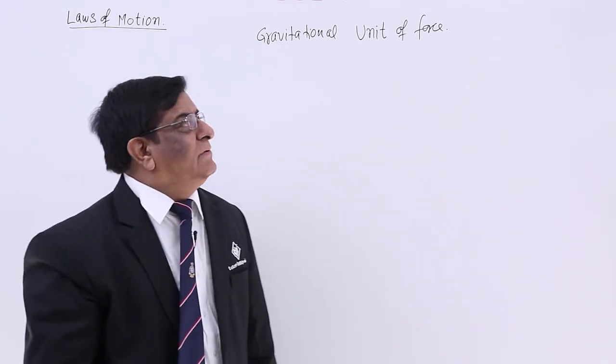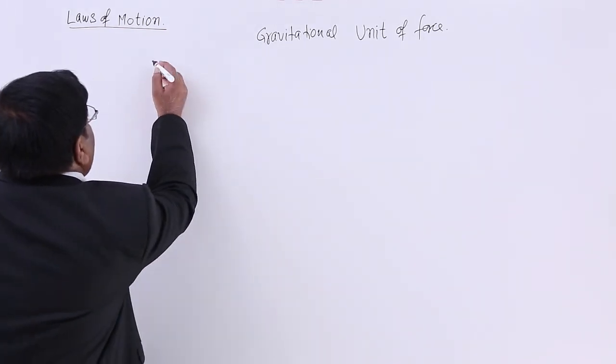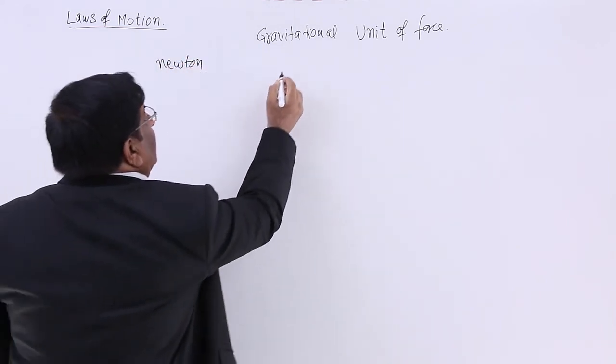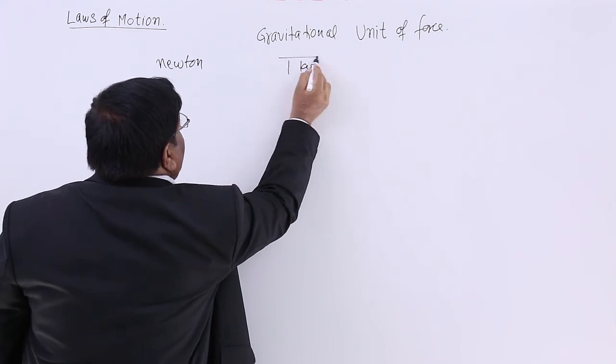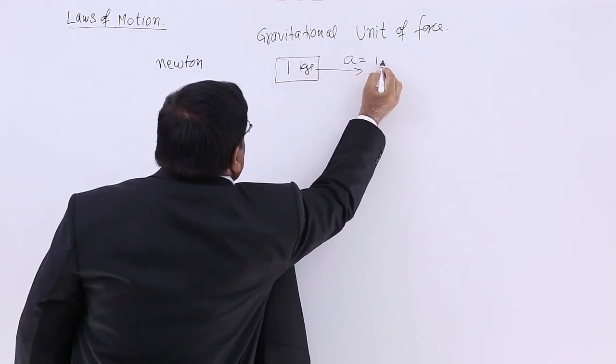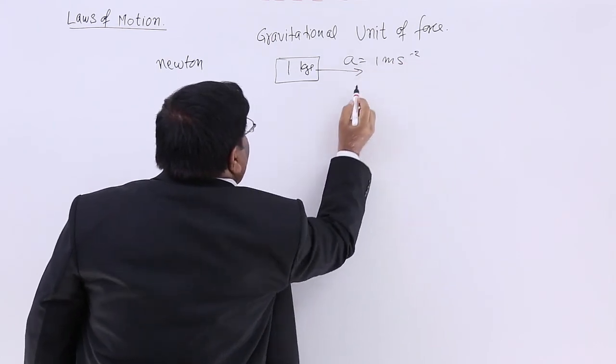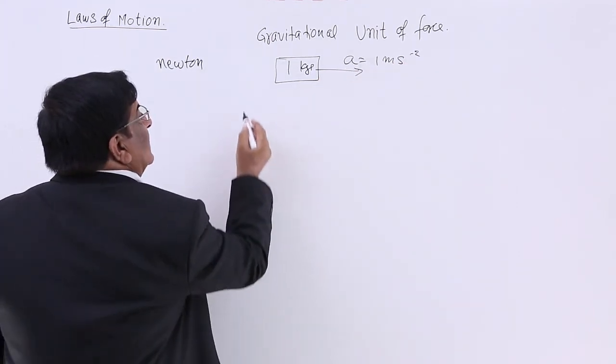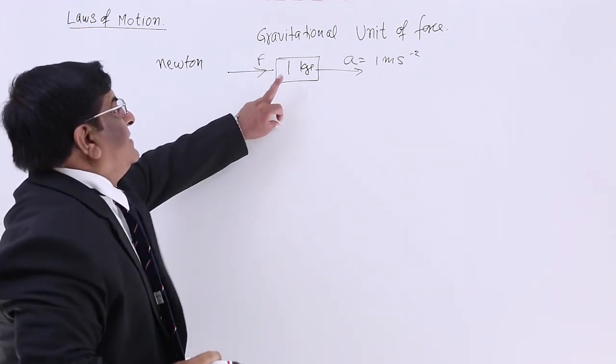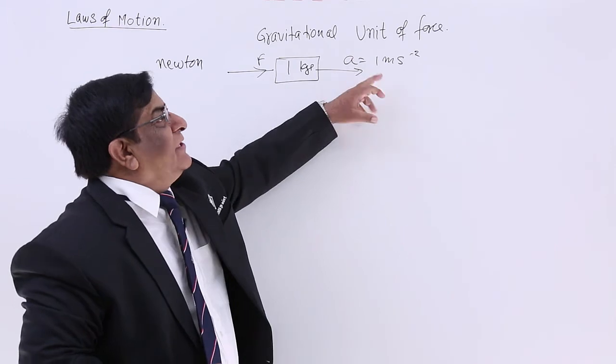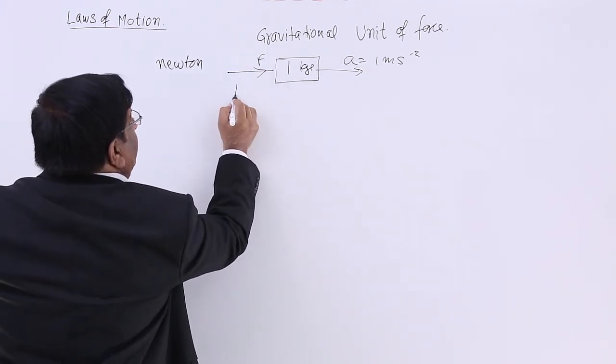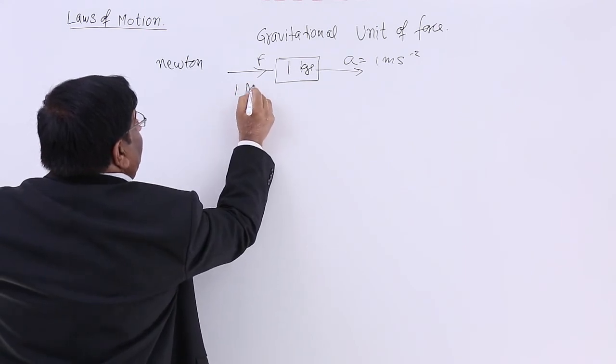We have studied one unit of force, that is Newton. For 1 kg mass with an acceleration equal to 1 meter per second squared, why is it having acceleration? Because we are applying certain force on it. If its mass is 1 kg and the acceleration created is 1 meter per second squared, then our force is supposed to be 1 Newton.